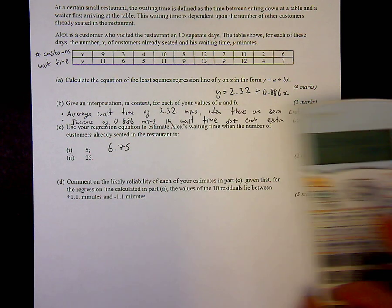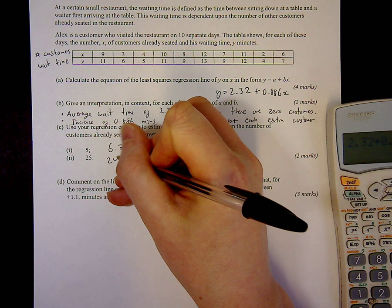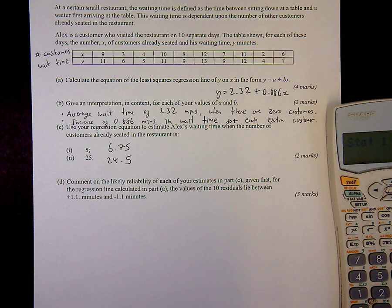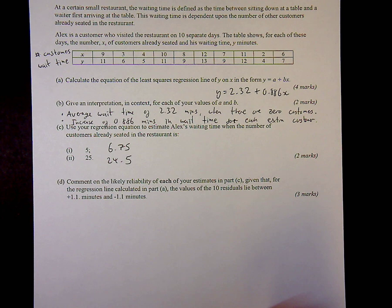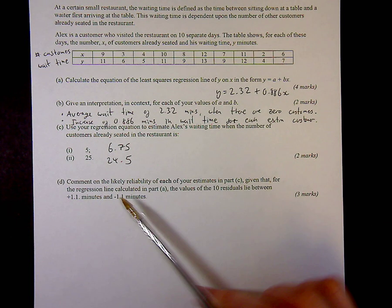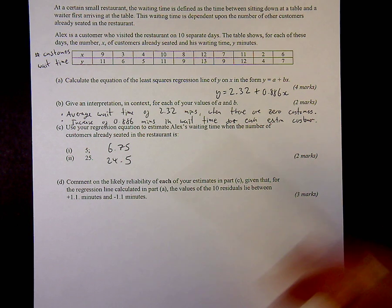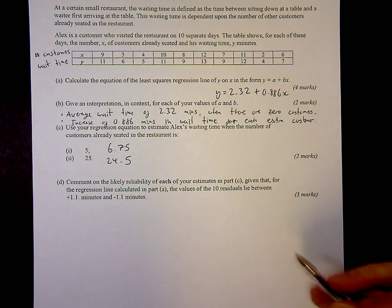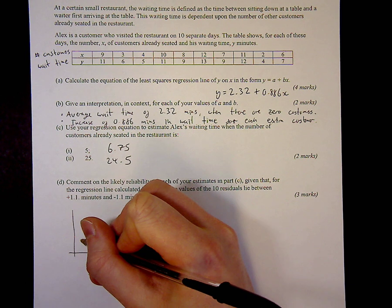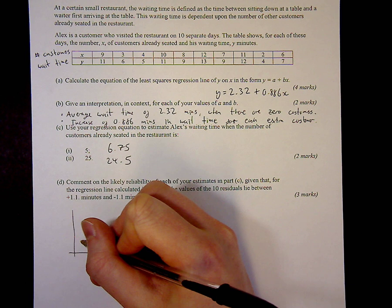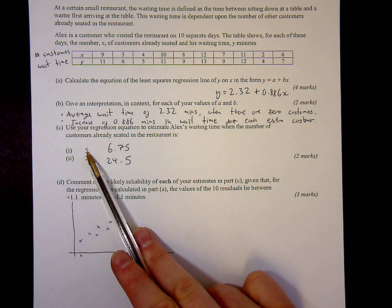Finally, comment on the likely reliability of these estimates. They'll be looking for you to use some specific terms like for instance residuals, which are mentioned here, and also about interpolation or extrapolation. Now here we've got an x value of 5, which is the number of customers clearly within the main value, so this is interpolation, reasonably within the restriction that residuals are between plus 1.1 and minus 1.1.